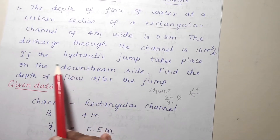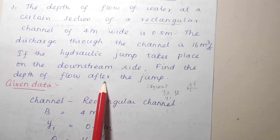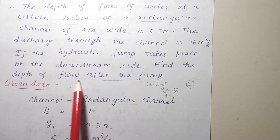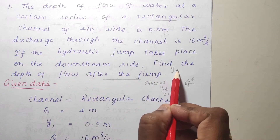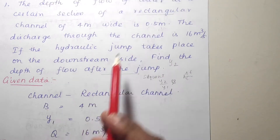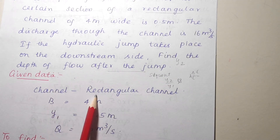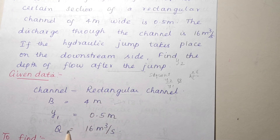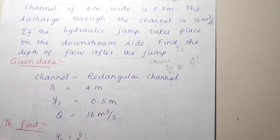If the jump takes place on the downstream side, find the depth of flow after the jump — that is y2. Since they ask for the depth after the jump, the given depth of 0.5 m will be y1. The given data: rectangular channel, width = 4 m, discharge q = 16 m³/s, and we need to find y2.